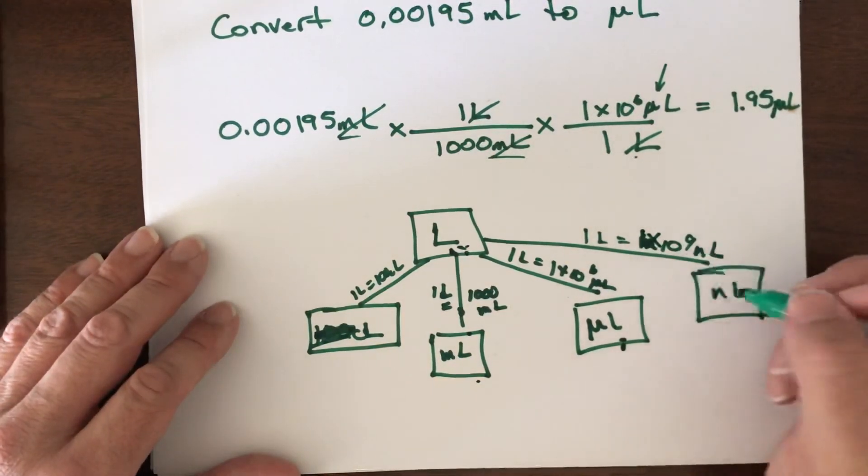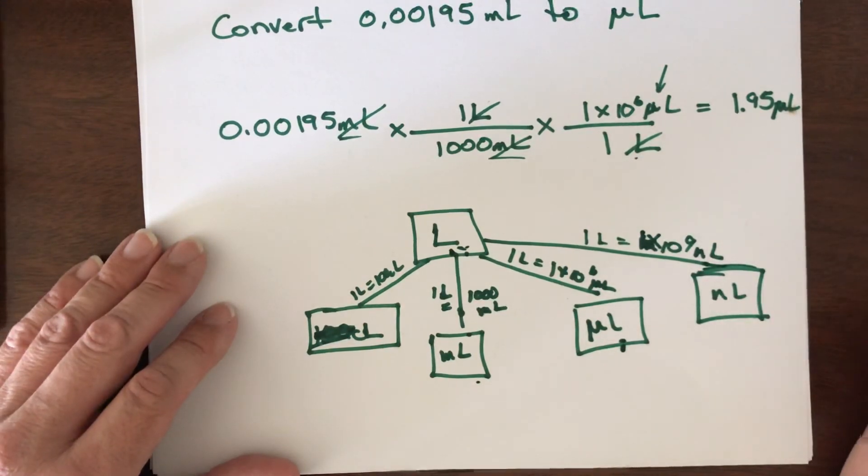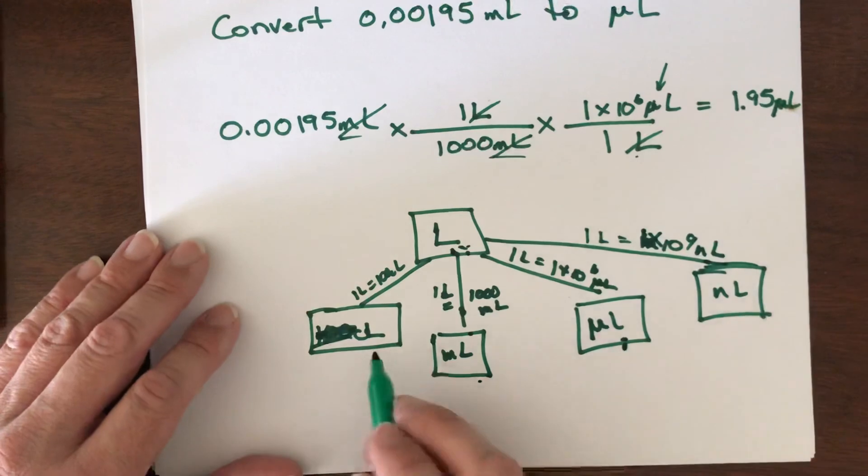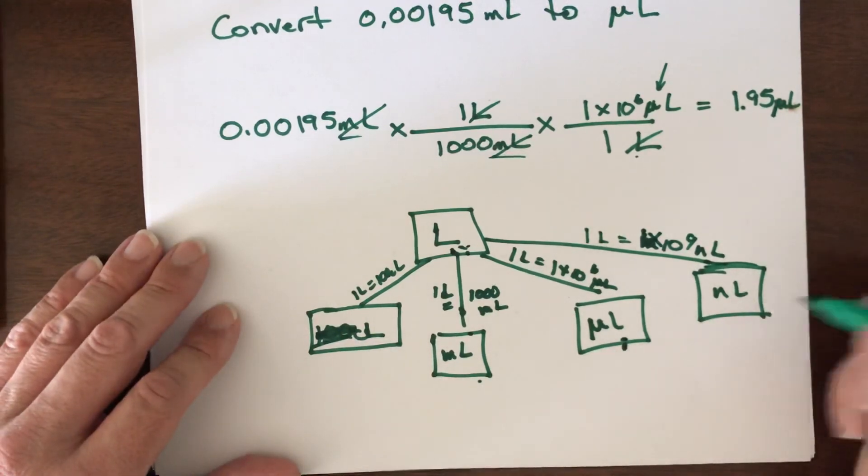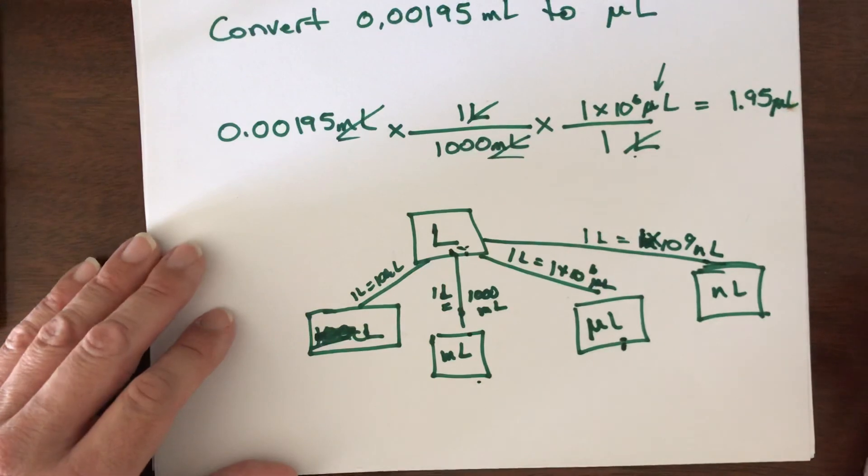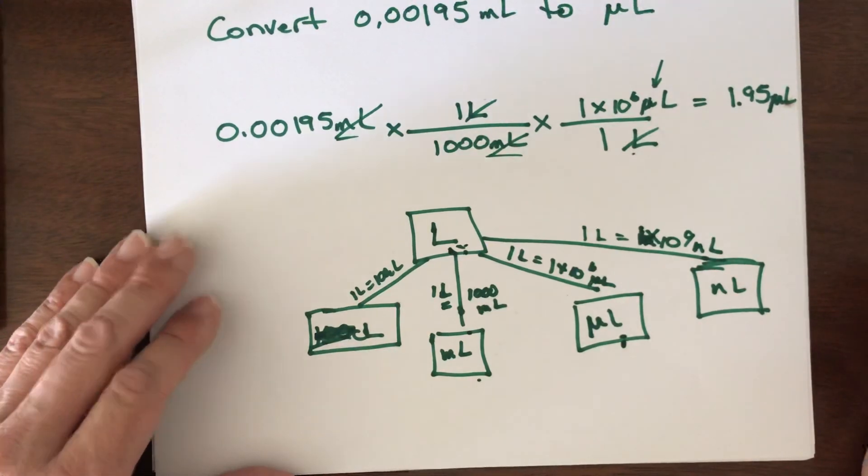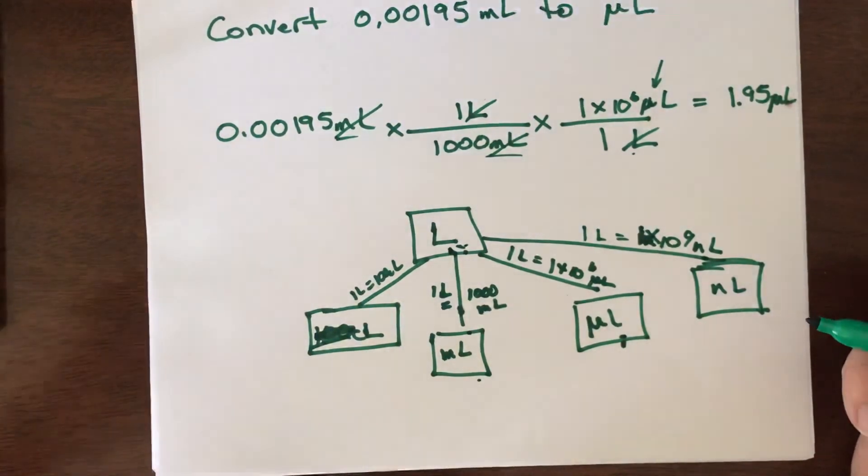It's going to be really helpful if you just memorize these. A lot of times in class I'm going to give you the crutch of providing these for you, but really you should be familiar with centi, milli, micro, nano, and then kilo—as I mentioned earlier, a kiloliter would be a thousand liters. So that's the introduction to the metric system with conversion factors.